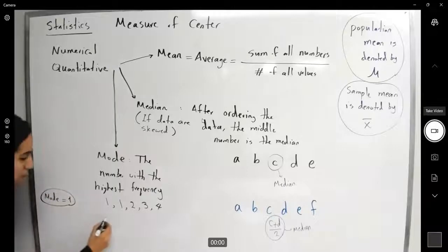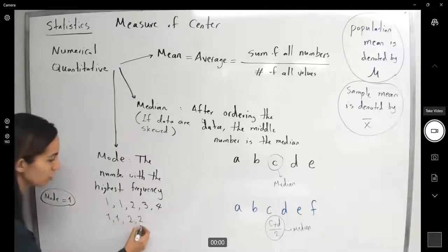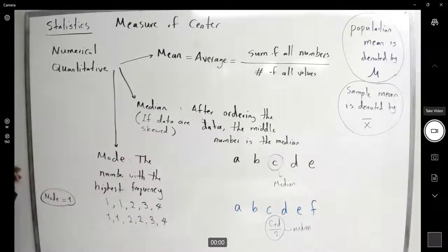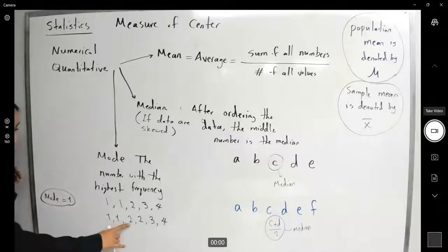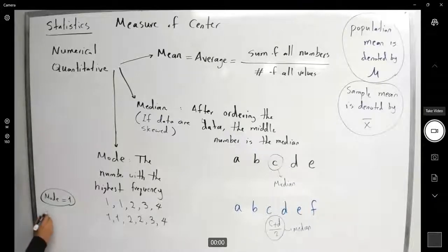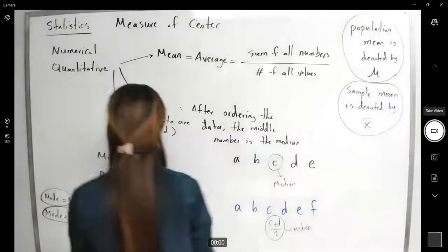What about 1, 1, 2, 2, 3, and 4? One and two are both repeated the same number of times. It means that you have a bimodal data. Mode is 1 and also 2. This set is a bimodal set.